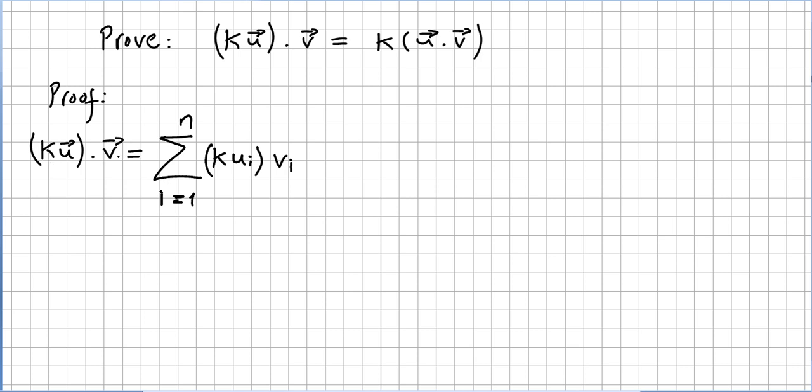So ku times v, by definition, that's the sum of kui, i beginning in 1 times vi. This is the definition.